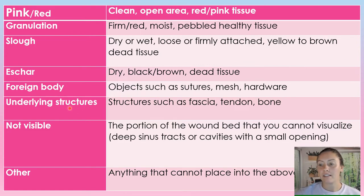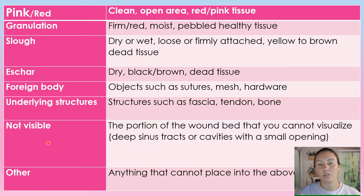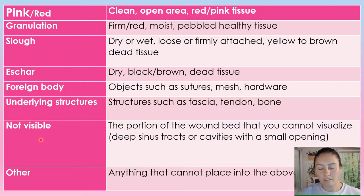Underlying structures are anything that's already there — your bone, tendon, ligaments — anything you can physically see in the wound bed. Non-visible means if you have tunnels or sinuses going deep and you can't see the wound base or how far it goes, and you're using your cotton tip applicator to probe down into these tracks — that is non-visible. You would just describe it as: the tunnel is non-visible.